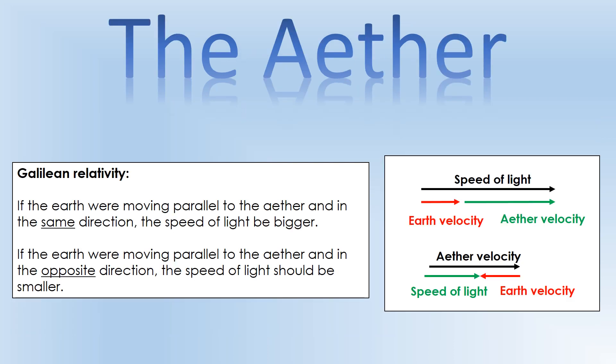This is an idea of Galilean relativity, essentially speeds adding together to produce bigger or smaller speeds. If the earth were moving parallel to the ether and in the same direction as it, we'd expect to measure a bigger speed of light. If the earth were moving parallel to the ether and in the opposite direction, we'd expect a smaller speed of light to be measured. If the earth were traveling perpendicular to the ether, we'd expect to measure 3 × 10⁸. So we're imagining this ether is like a wind that's blowing through space and light is essentially traveling on that wind.